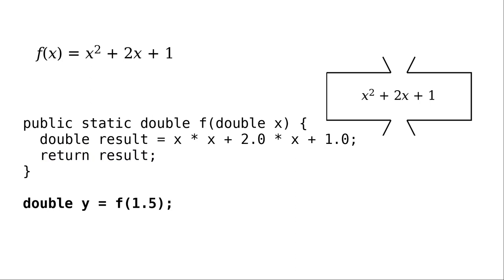On the right-hand side, the argument 1.5 is copied into the parameter x, it is used in the calculation, and the result gets returned. And that becomes the value of the right-hand side, which is then assigned to y.